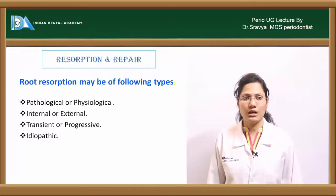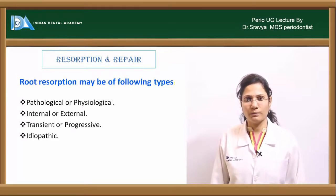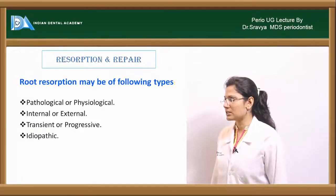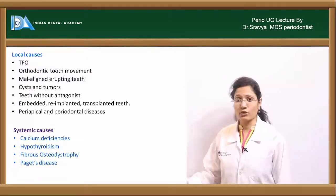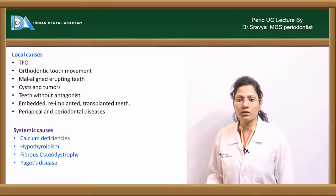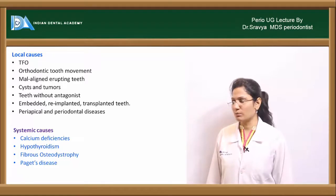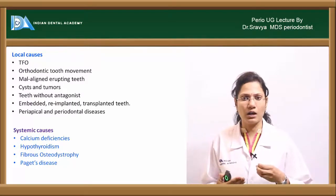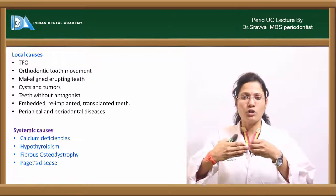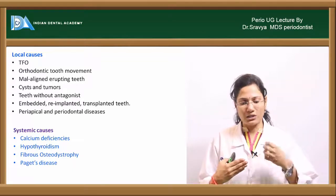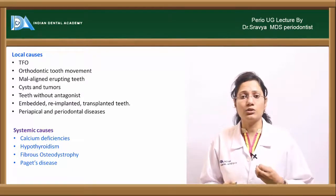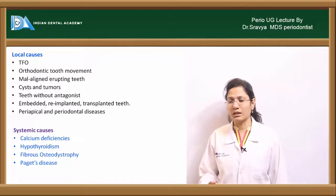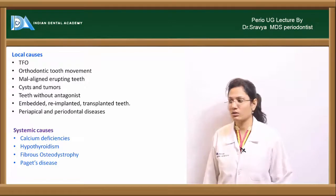Cementum resorption can be caused by local or systemic factors. Local causes include trauma from occlusion, excessive orthodontic tooth movement, mal-aligned erupting teeth (e.g., horizontally impacted teeth causing pressure on adjacent teeth), cysts and tumors of the jaws, teeth without antagonists, and embedded, replanted, or transplanted teeth.